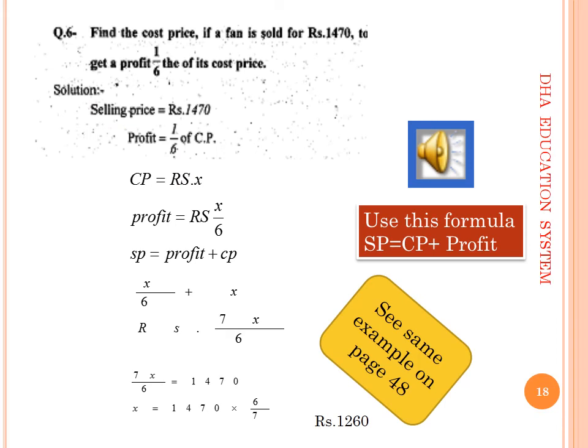Question 6: Find the cost price if a fan is sold for rupees 1,470 at a profit of one-sixth of its cost price. Let CP = x, so profit = x over 6. Using SP = profit plus CP: SP = x over 6 plus x = 7x over 6. Setting 7x over 6 equal to 1,470 and solving gives x = 1,470 into 6 over 7, so CP = rupees 1,260.